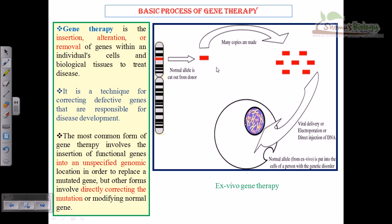The basic process of gene therapy is simply the insertion, alteration, or removal of genes within individual cells and biological tissues to treat disease. If we can remove a faulty gene from a chromosome and insert a new normal gene in its place, we can cure the disease. This is the basic concept — transferring a normal gene to replace the corrupted copy.